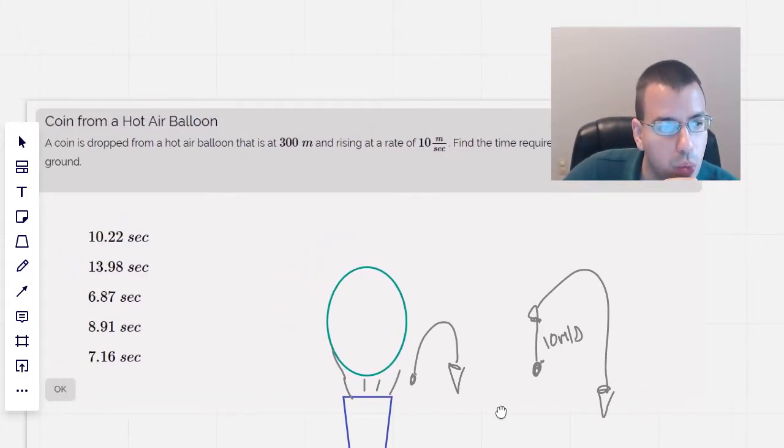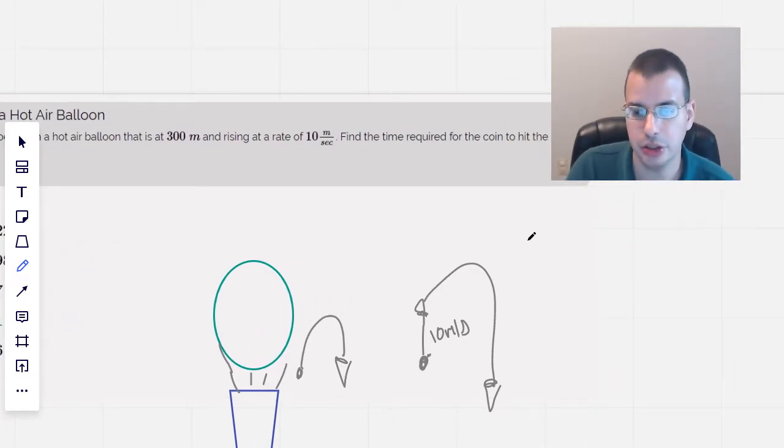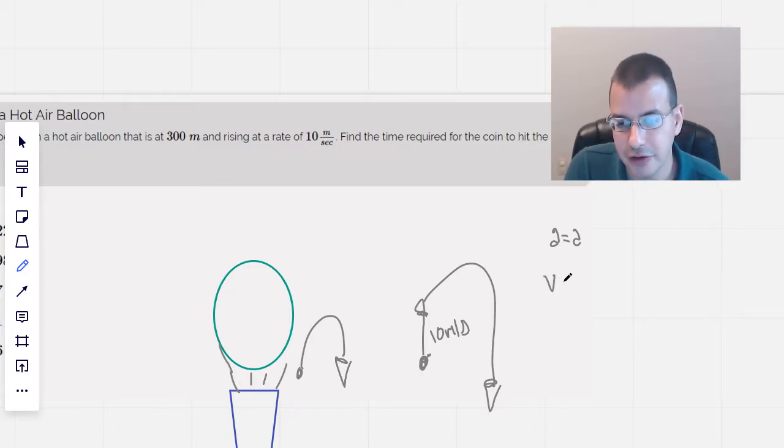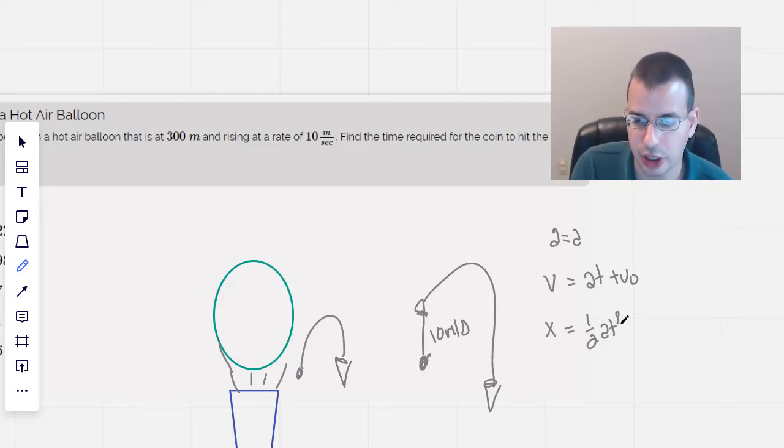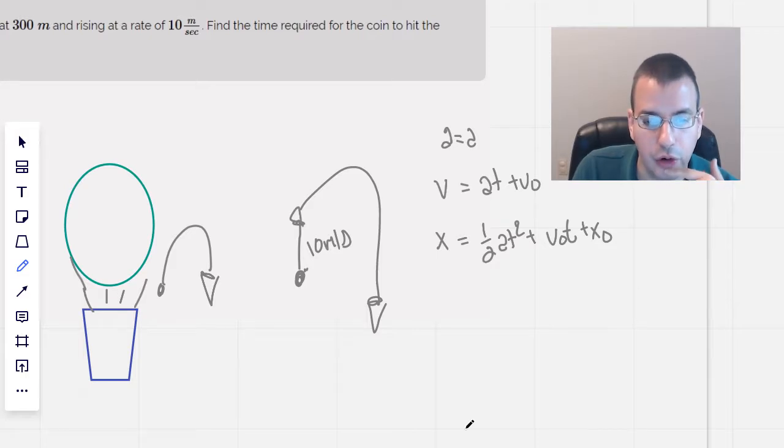I'm going to start by writing the kinematic equations. So a equals a. We have an acceleration that's constant. V equals at plus v-naught. And then we have a distance x which is one half at squared plus v-naught t plus x-naught. Now this is all in the y direction. Even though I wrote x's, you can use it for any dimension that you would like. In this case, we would like to use it for y.